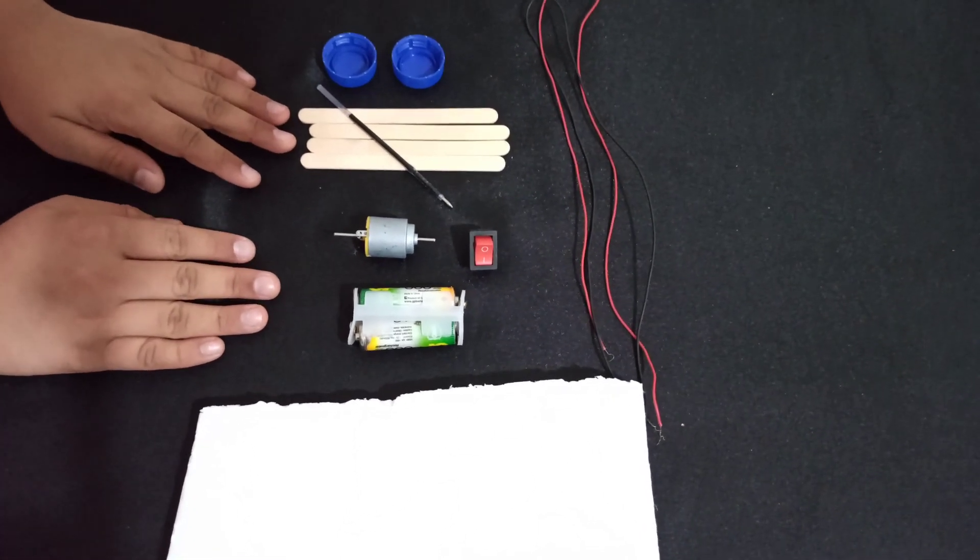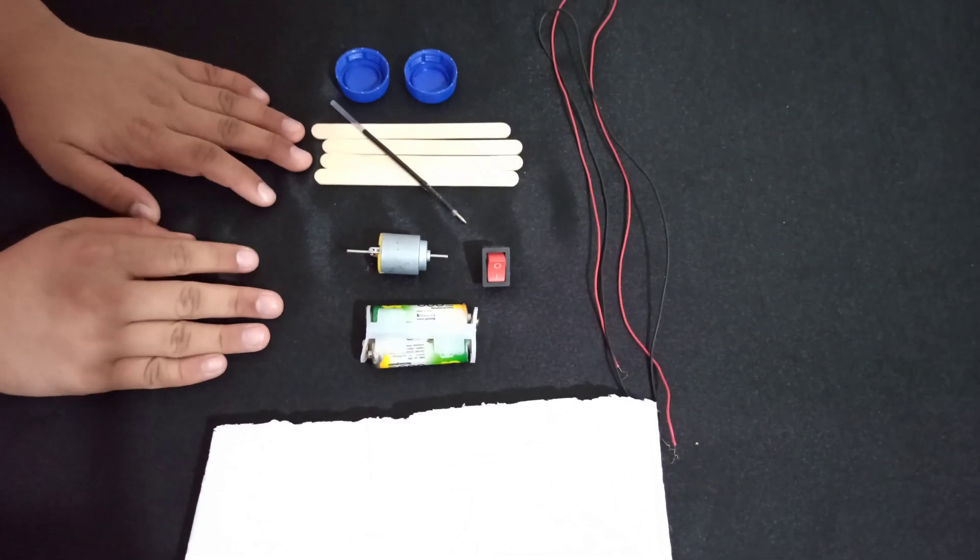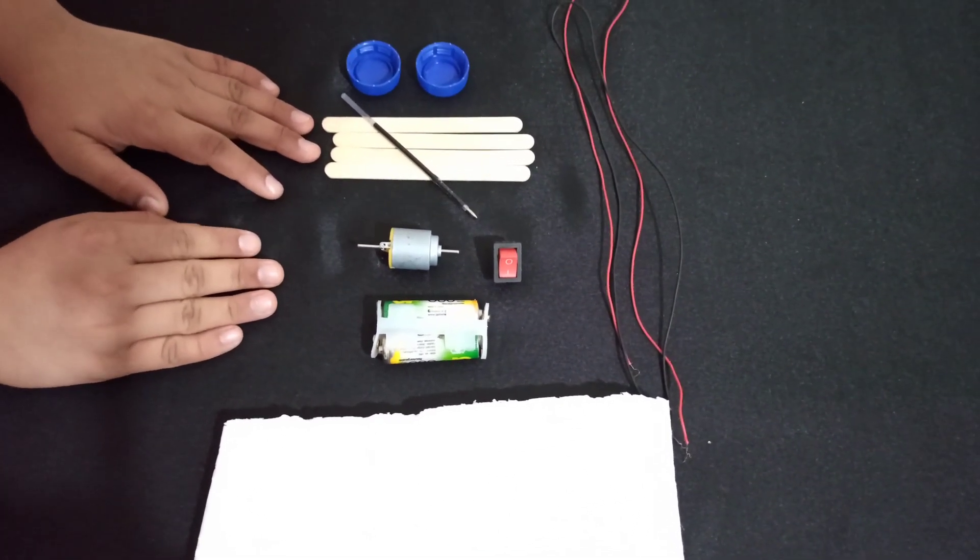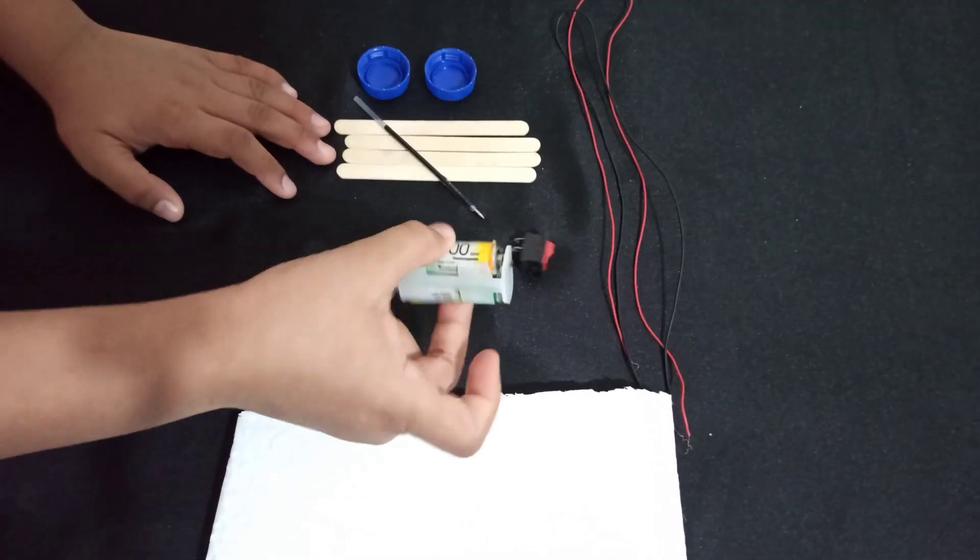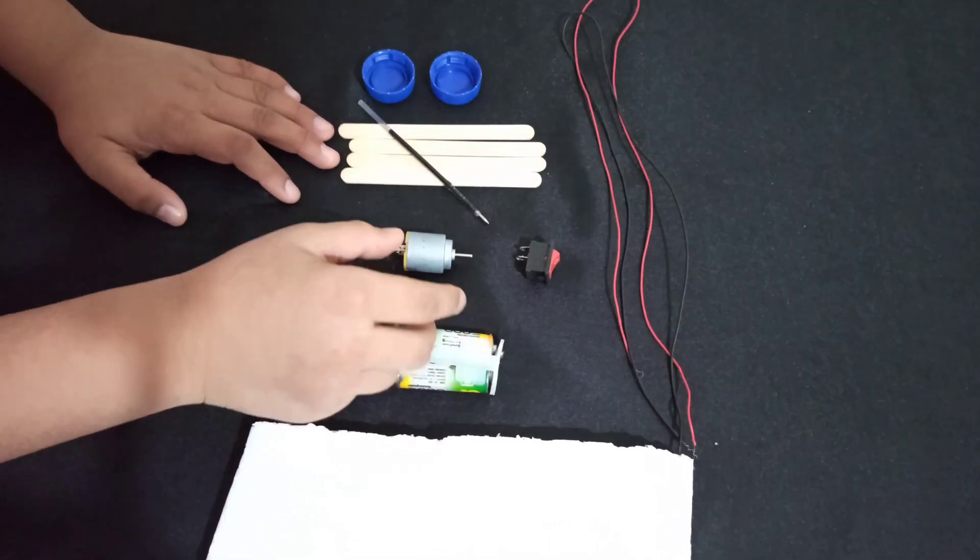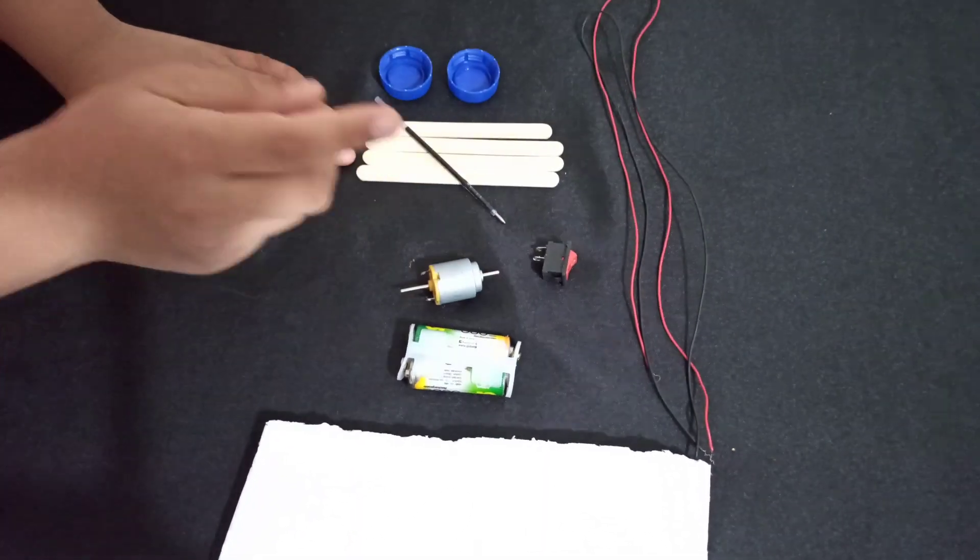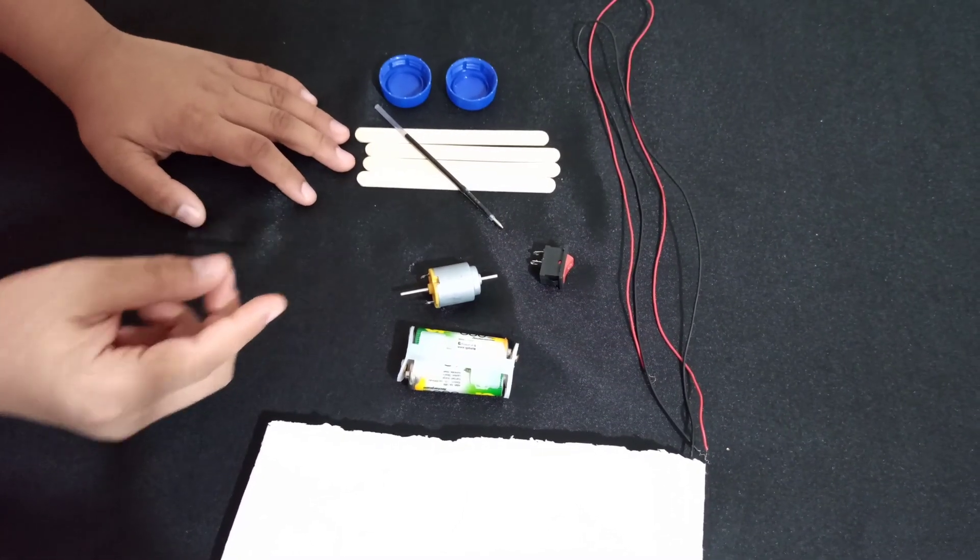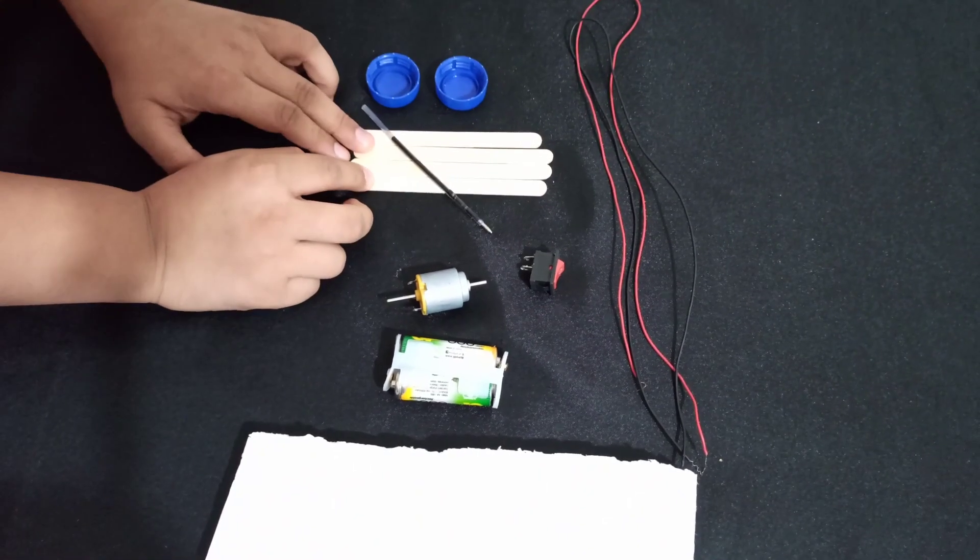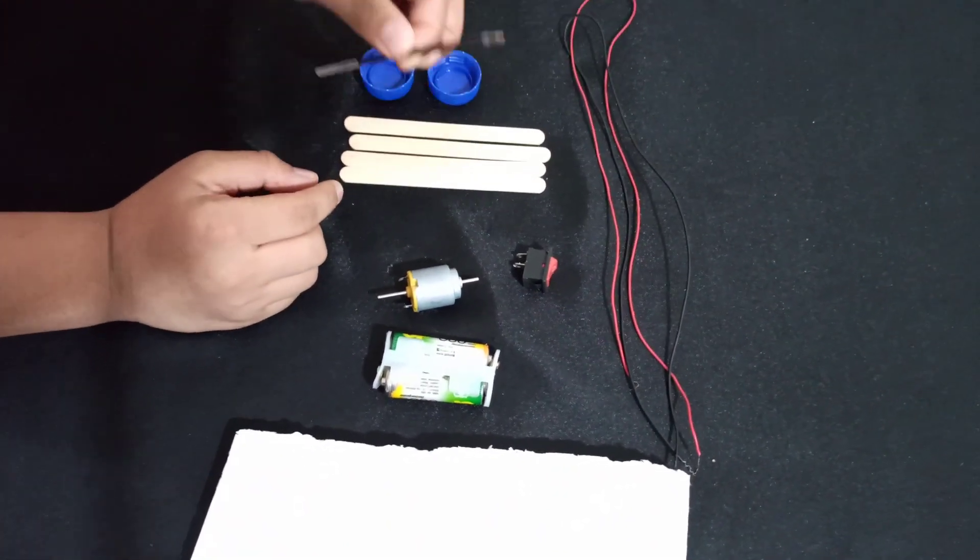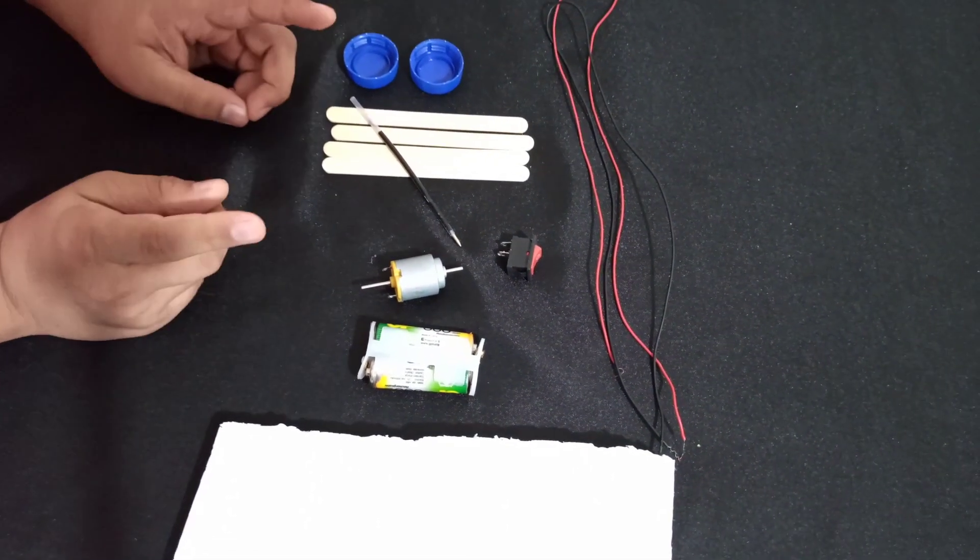My last boat is the motorized double paddle boat, so let's get started. The things you will need for this experiment are styrofoam, a battery with battery casing, a double head shaft motor, an on-off switch, two wires, three to four ice cream sticks, a refill, and two bottle caps. So here's how you make it.